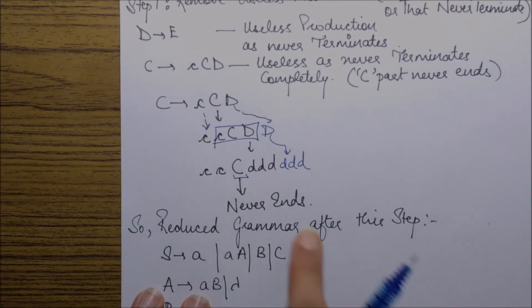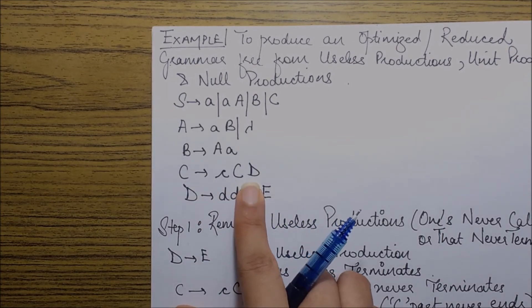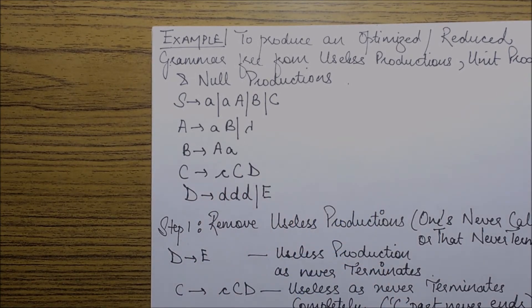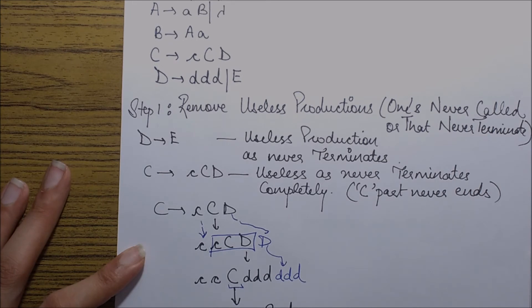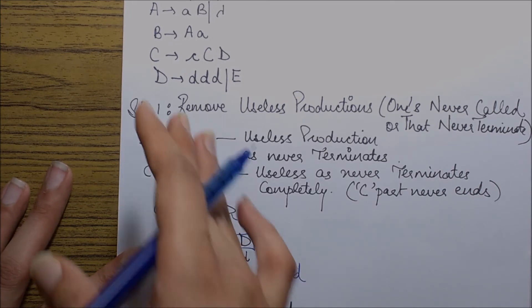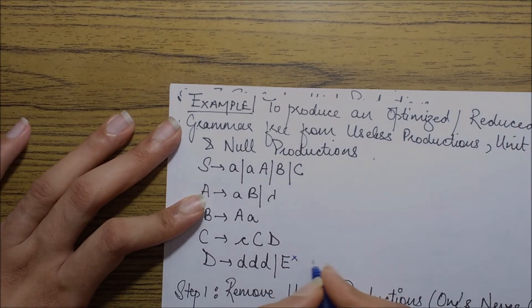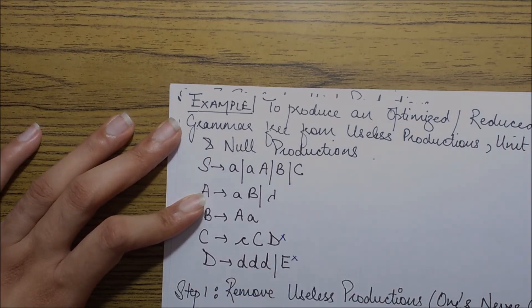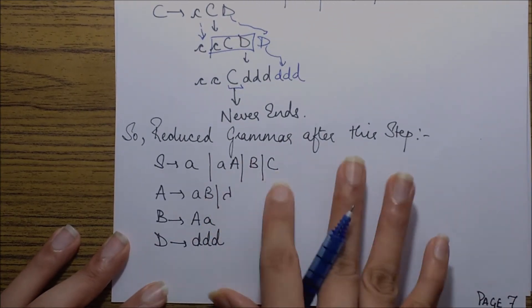So I can say that this production C goes to small c capital C D is also a useless production because it won't ultimately ever terminate. So we have discovered two useless productions and we'll remove them. So I can put a small cross over here and over here as well. So the reduced grammar after the step is this.